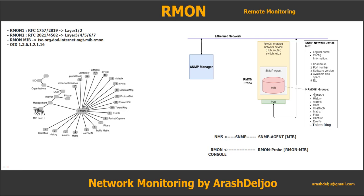Before talking about the RMON groups, RMON has two versions: version 1 and version 2. RMON 1 is specified in RFC 1757 and 2819, and it works on layers 1 and 2 — for example, it can gather information based on layer 2 addresses like the MAC address. RMON 2 is specified in RFC 2021 and 4502, and works on layers 3 through 7 of the OSI model.